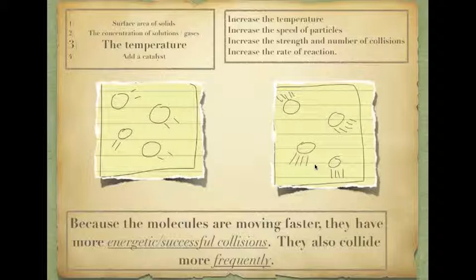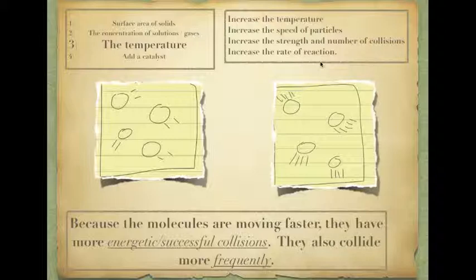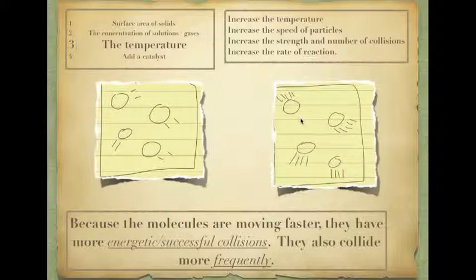With temperature, there's also another factor — the strength of the collision. For a reaction to happen, not only do you need to collide, but you need to collide with a certain amount of energy — enough energy to break the bonds of another molecule, and then reattach to form the product. So with temperature, we're not only increasing the number of collisions, we're also increasing the strength of the collisions. That is why we increase the rate of reaction: the number of successful collisions will increase. If you just bump into someone lightly it makes no difference, but with a lot of energy you get a reaction.